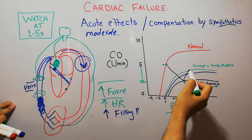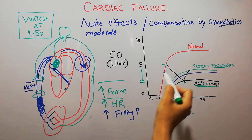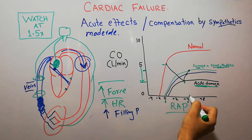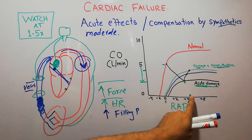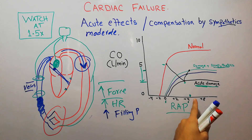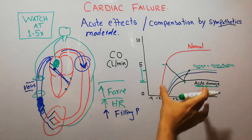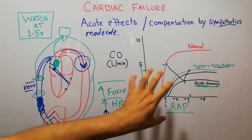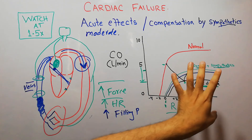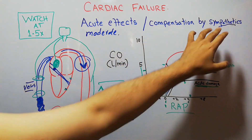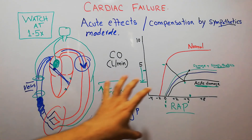With sympathetic activation and damage combined, the new cardiac output reaches a higher level than during acute failure alone, but this comes at the cost of an elevated right atrial pressure. The right atrial pressure remains high rather than returning to zero. Over time, along with sympathetic compensation, fluid retention will also occur to further help recover cardiac output.